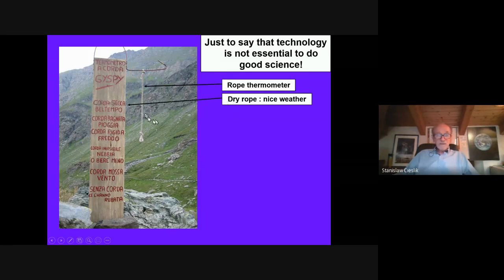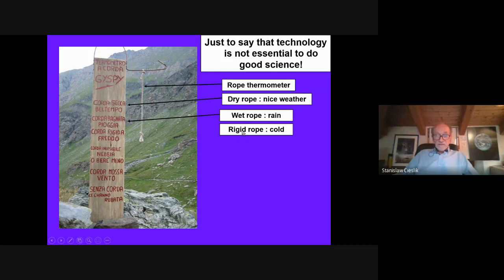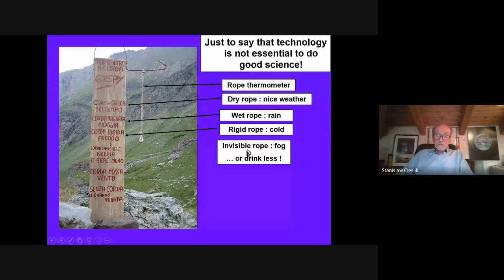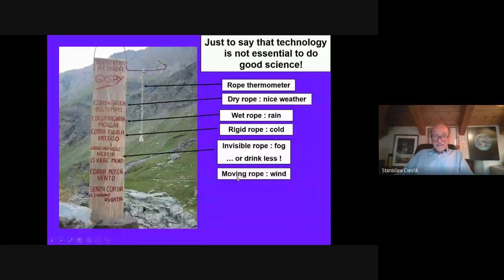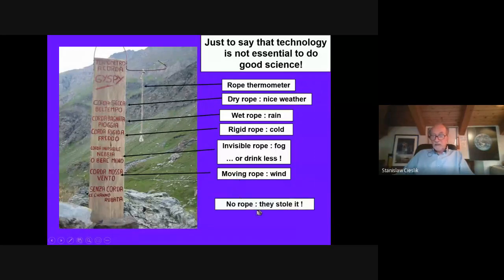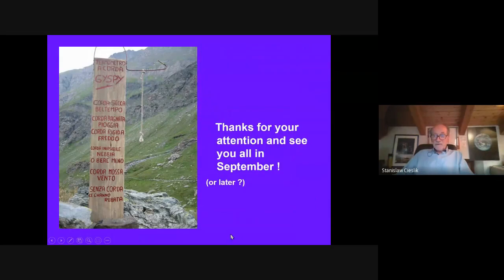If the rope is dry — nice weather. When the rope is wet — rain. If it's rigid — cold weather. When it's invisible — fog, or drink less. When the rope is moving — wind. And when there is no rope — somebody stole it. Thank you for your attention, and see you hopefully soon, maybe in September.